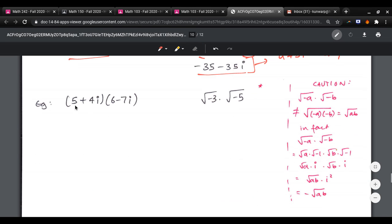Another example here that I'm going to work out in this video. 5 times 6 is 30. 5 times negative 7 is negative 35, 4i times 6 is 24i, and 4i times negative 7i is negative 28i squared. So that's 30, negative 35 plus 24i is negative 11i, that's negative 28 times negative 1, that's 30 minus 11i plus 28, which is 58 minus 11i.